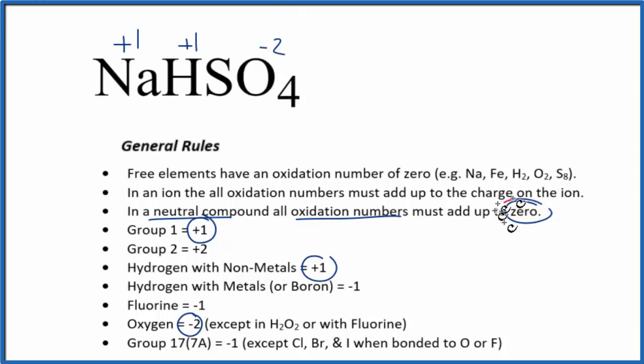So all of this is going to add up to zero. So we can just write an equation. One plus one plus, we don't know what the sulfur is, let's call that X. And then minus two, multiplied by the four, since we have four oxygens. That equals zero.